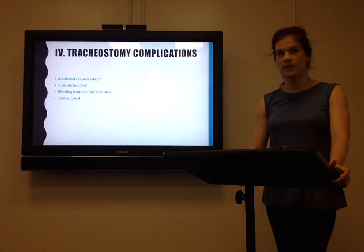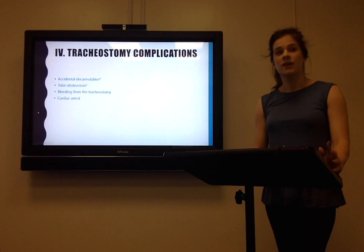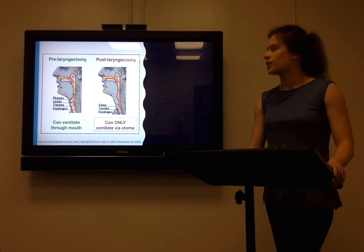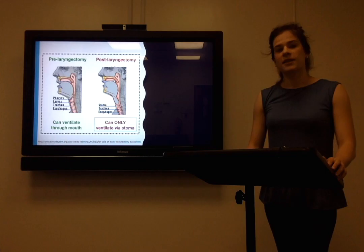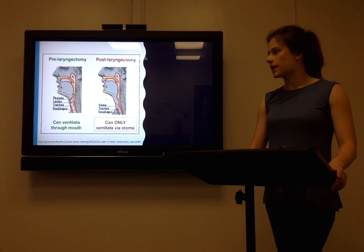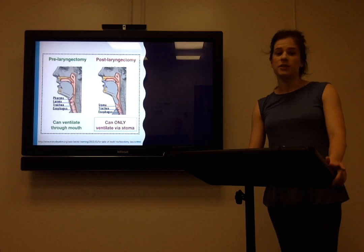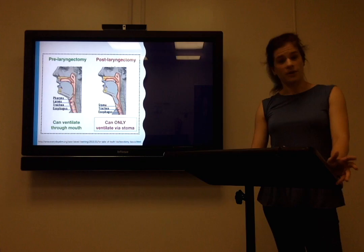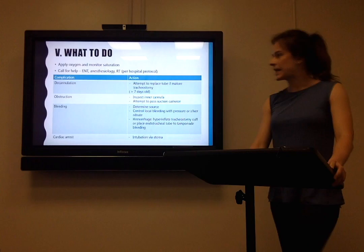Accidental decannulation and tube obstruction have stars next to them because these are not always emergencies. If your patient has had a laryngectomy and there's a problem with their tracheostomy, they are no longer able to ventilate at all because that tracheostomy is their only source of ventilation — they can't ventilate through the mouth. On the other hand, if your patient does have a somewhat patent upper airway and their tracheostomy has a problem, potentially they're still able to ventilate through the mouth through their natural airway. So it's really important that you know whether your patient has two airways or one airway.